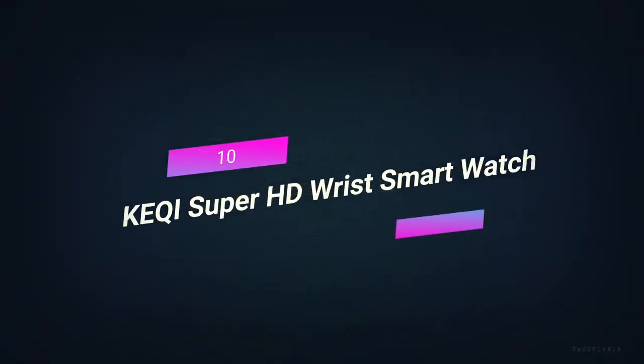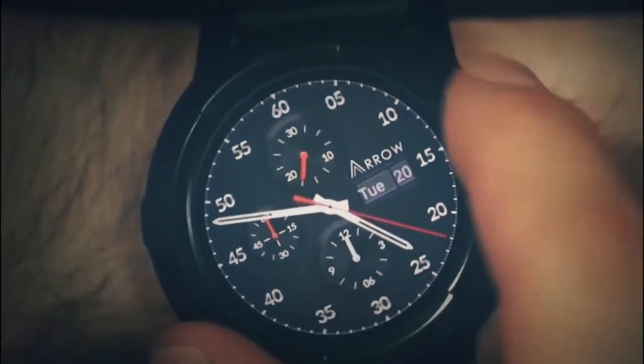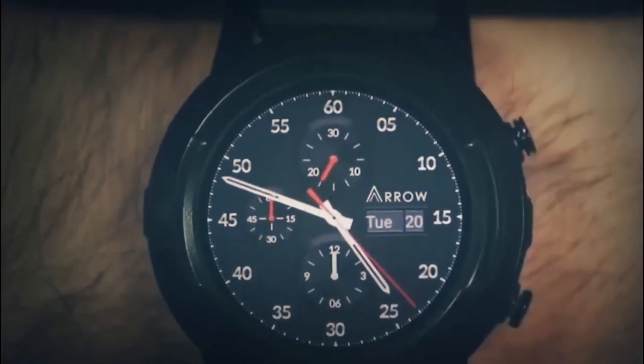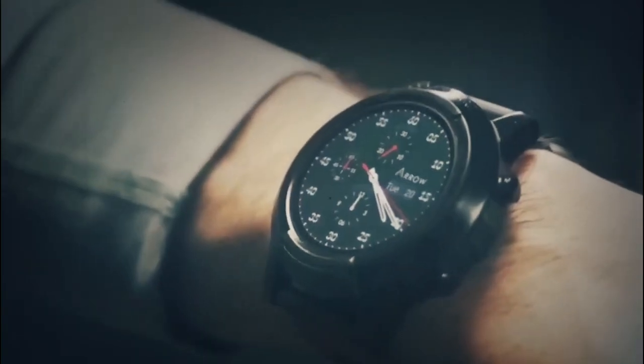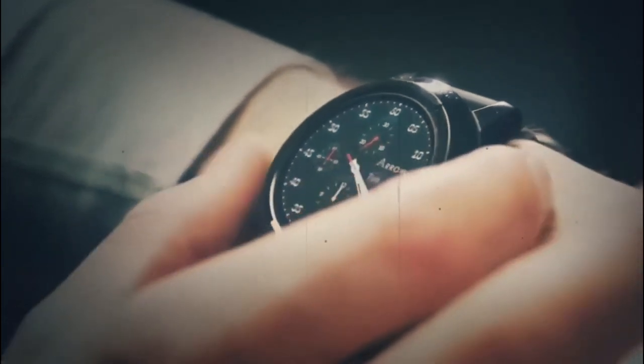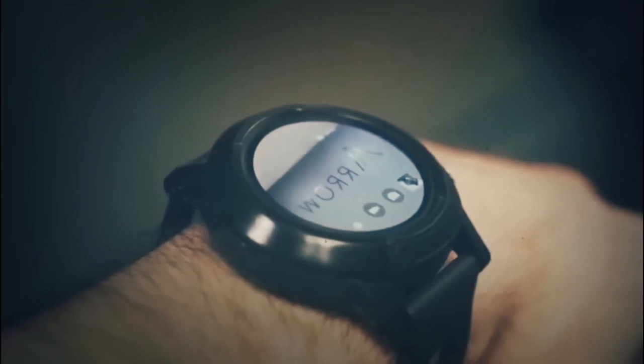Number 10, Kiki Super HD Wrist Smart Watch. A smart watch can do a lot more than just tell time. Kiki has made a smart watch that can really help people spy. Features include sound and video recordings, photos, and 2K high definition color video. You can turn on or off the timestamp and the battery lasts for 60 minutes.